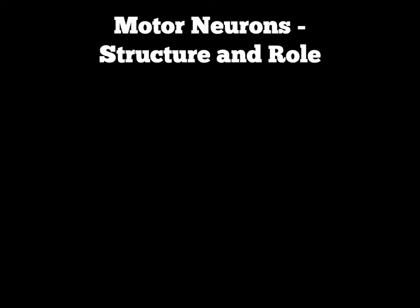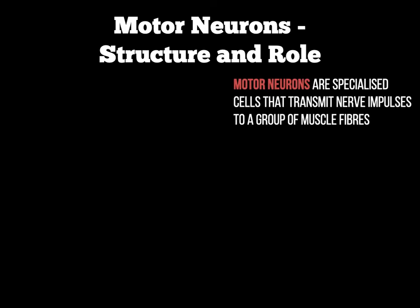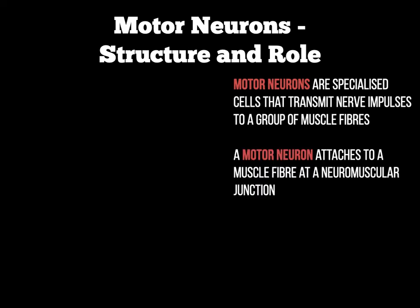This is an important section to make your notes. Motor neurons are specialised cells that transmit nerve impulses to a group of muscle fibres. The motor neuron will attach to a muscle fibre at what we call a neuromuscular junction.